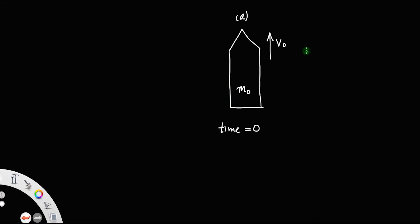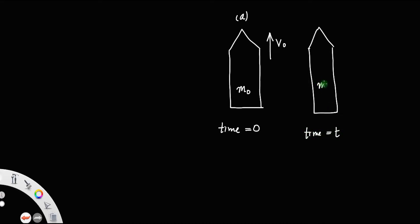After a time t, let the mass of the rocket be m and the velocity be v. Here there is some ejection of fuel; let vg represent the velocity of the fuel ejected.